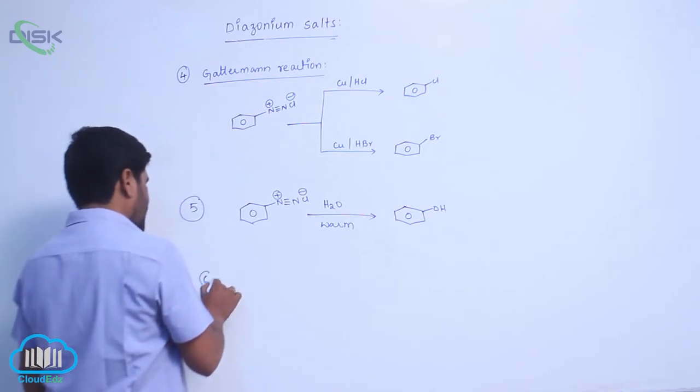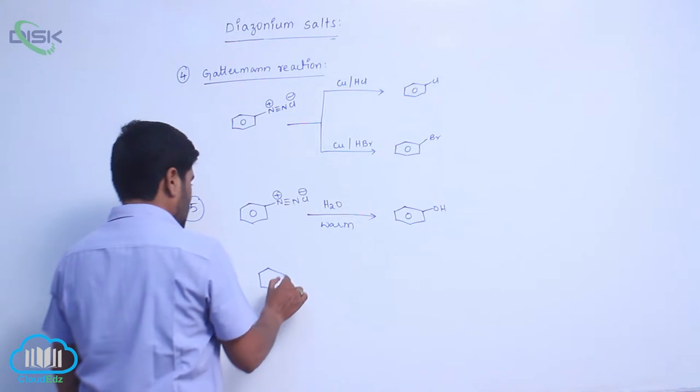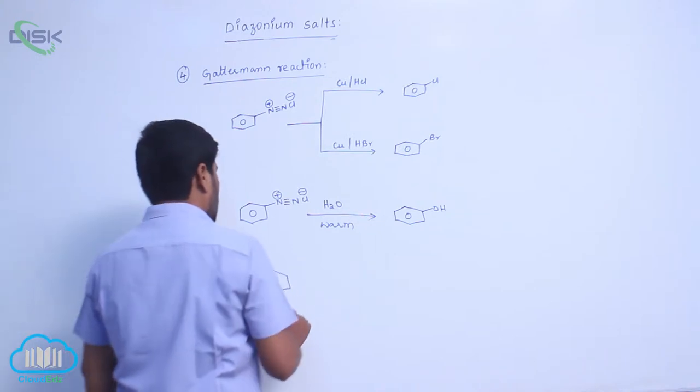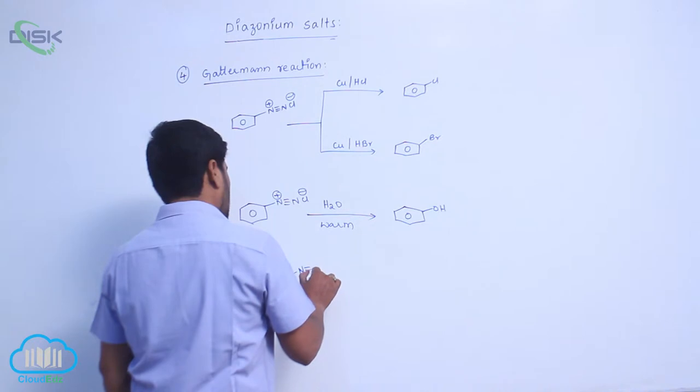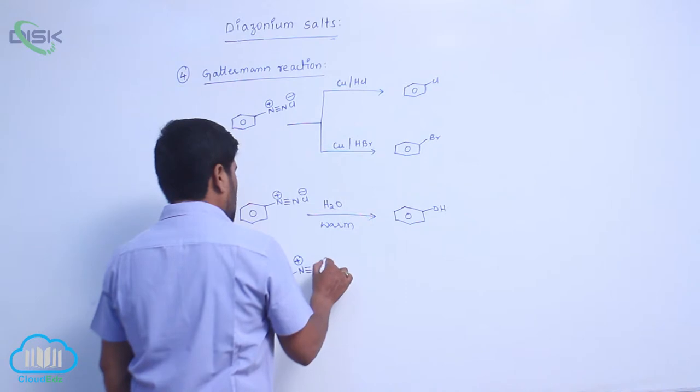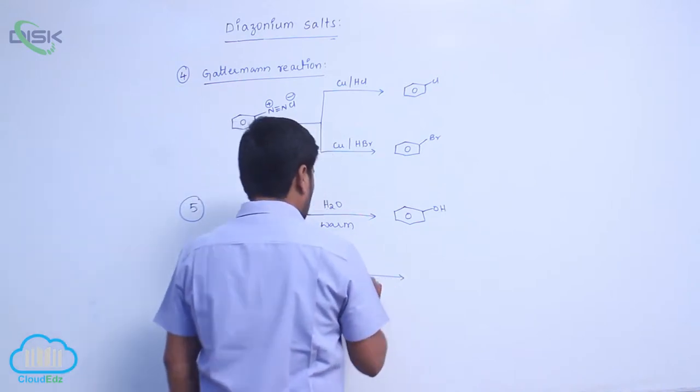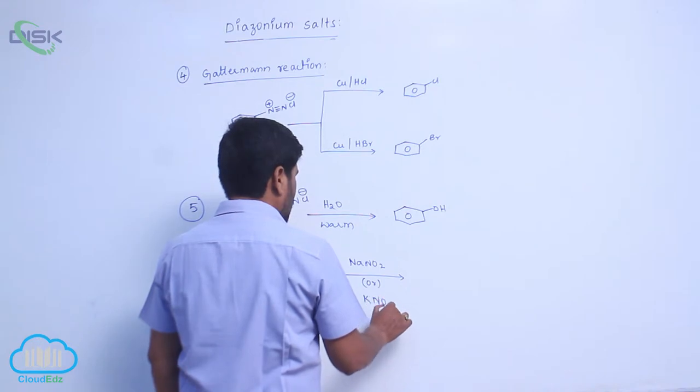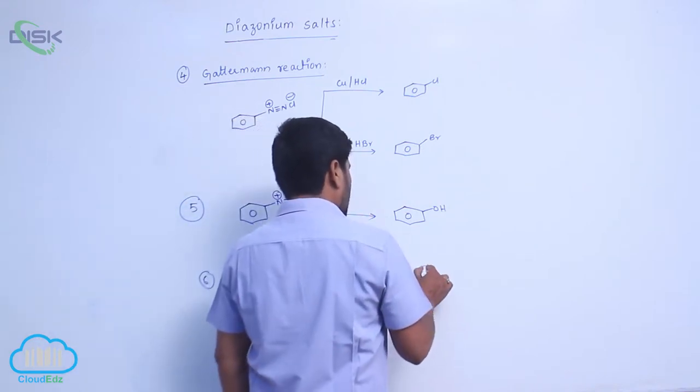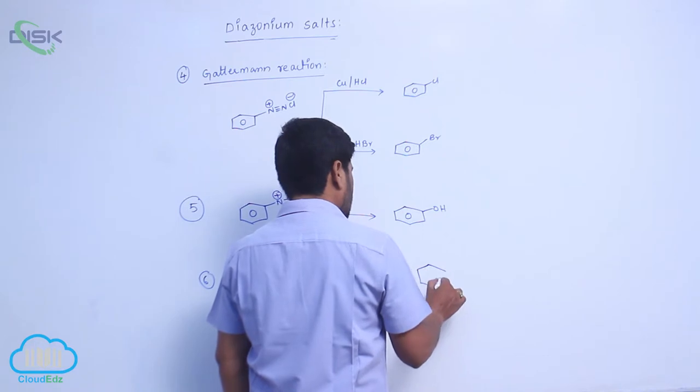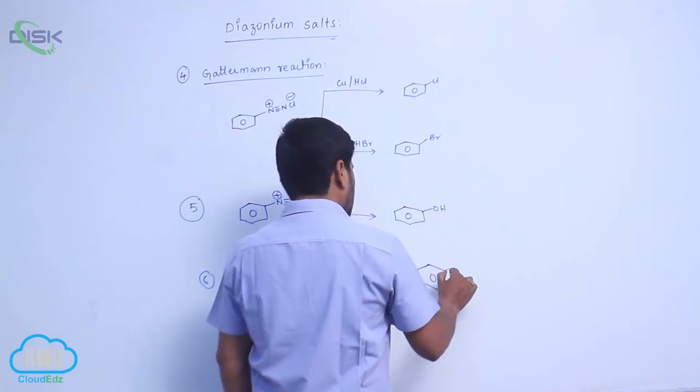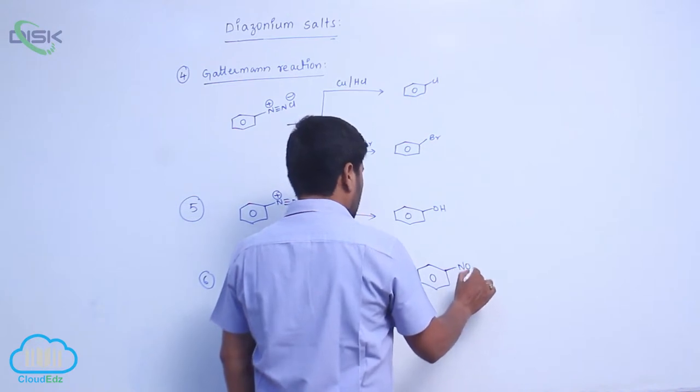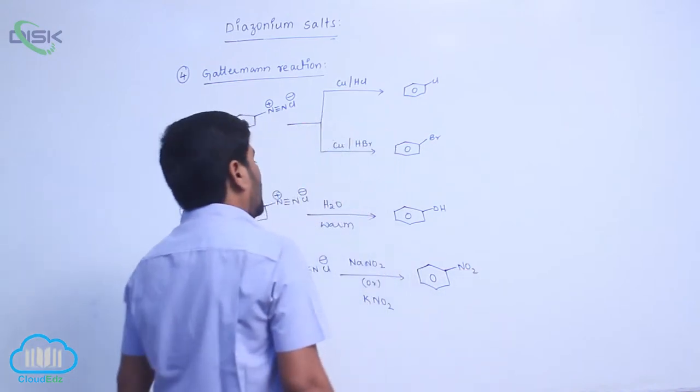Sixth one is benzene diazonium chloride (N≡N+) reacts with sodium nitride or potassium nitride. It is an ionic nitride, therefore it forms nitrobenzene.